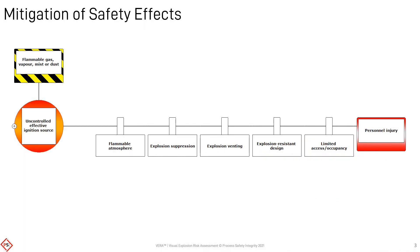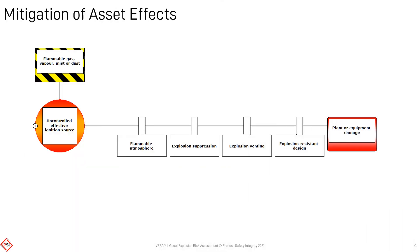If an ignition occurs, the effects may be reduced by suppressing or venting the explosion, or the equipment or structure is designed to be capable of withstanding the impact. Reducing the access to and/or occupancy within a hazardous area may contribute to risk reduction. The impact on fixed plant or equipment is not reduced by access or occupancy, unless they are mobile and only occasionally in the hazardous area.